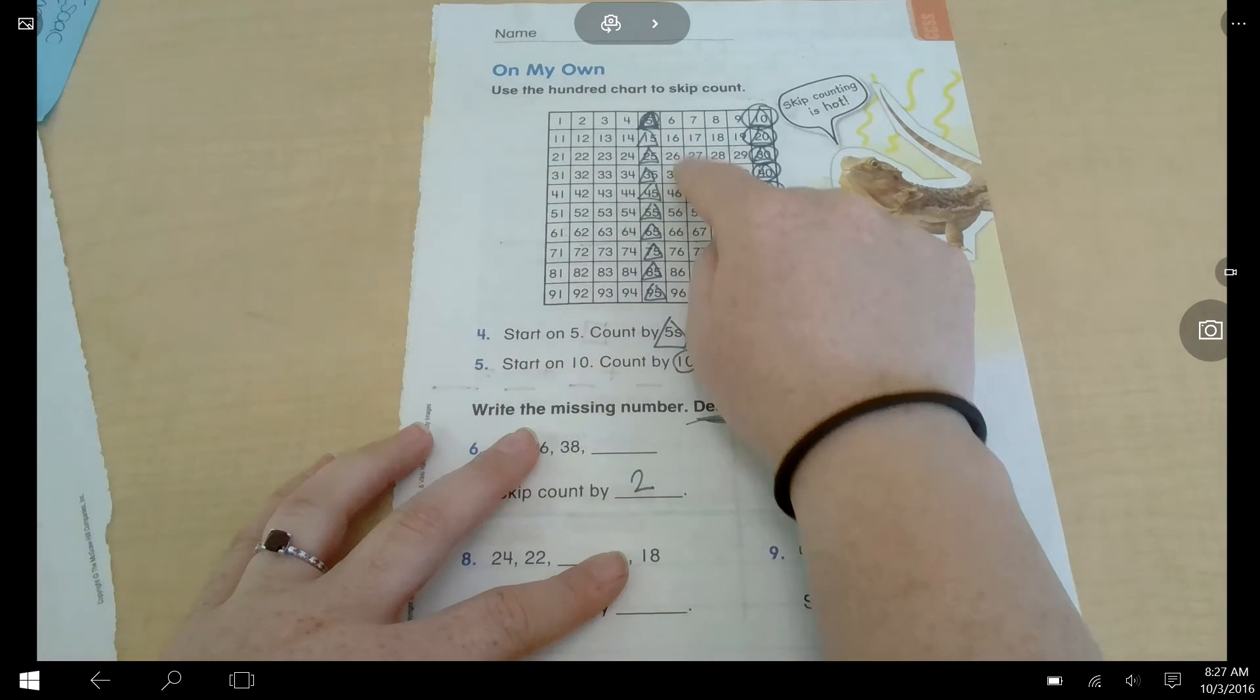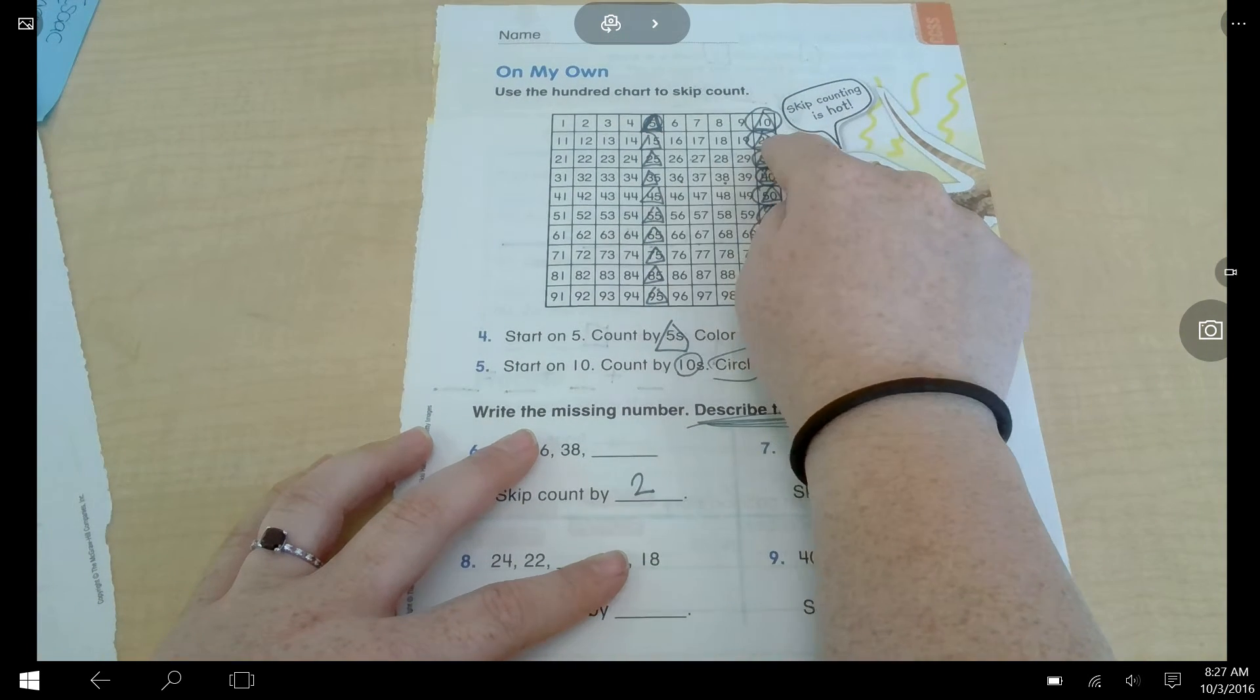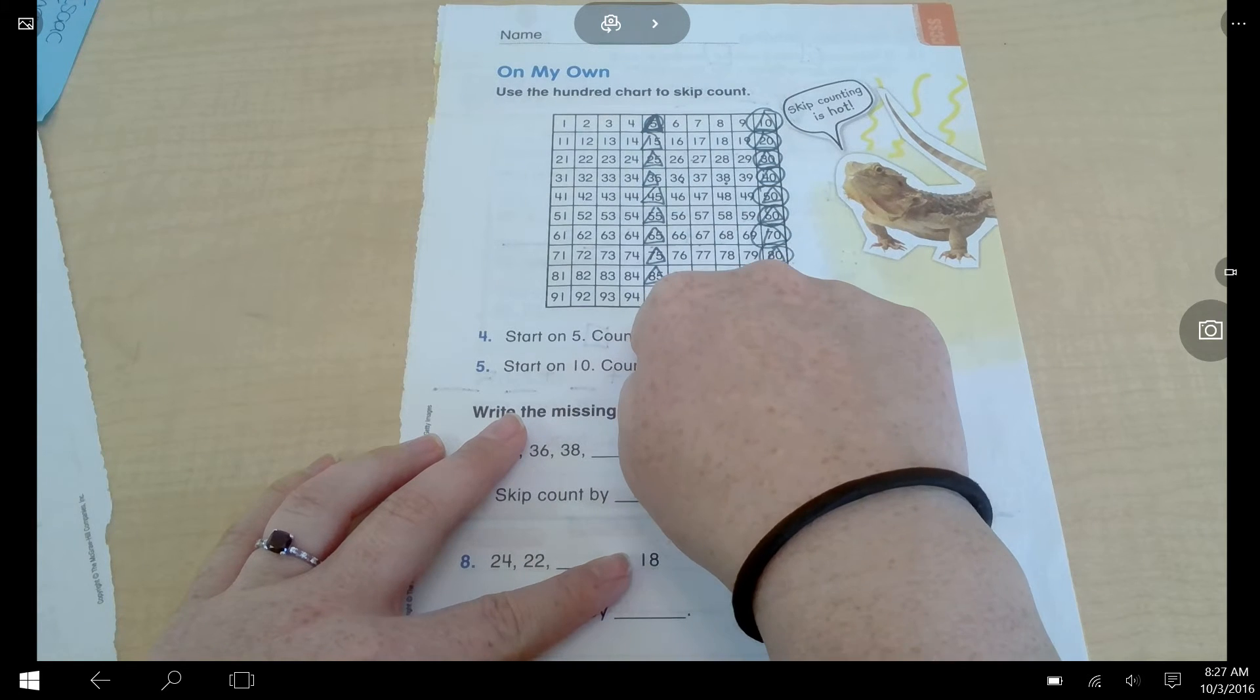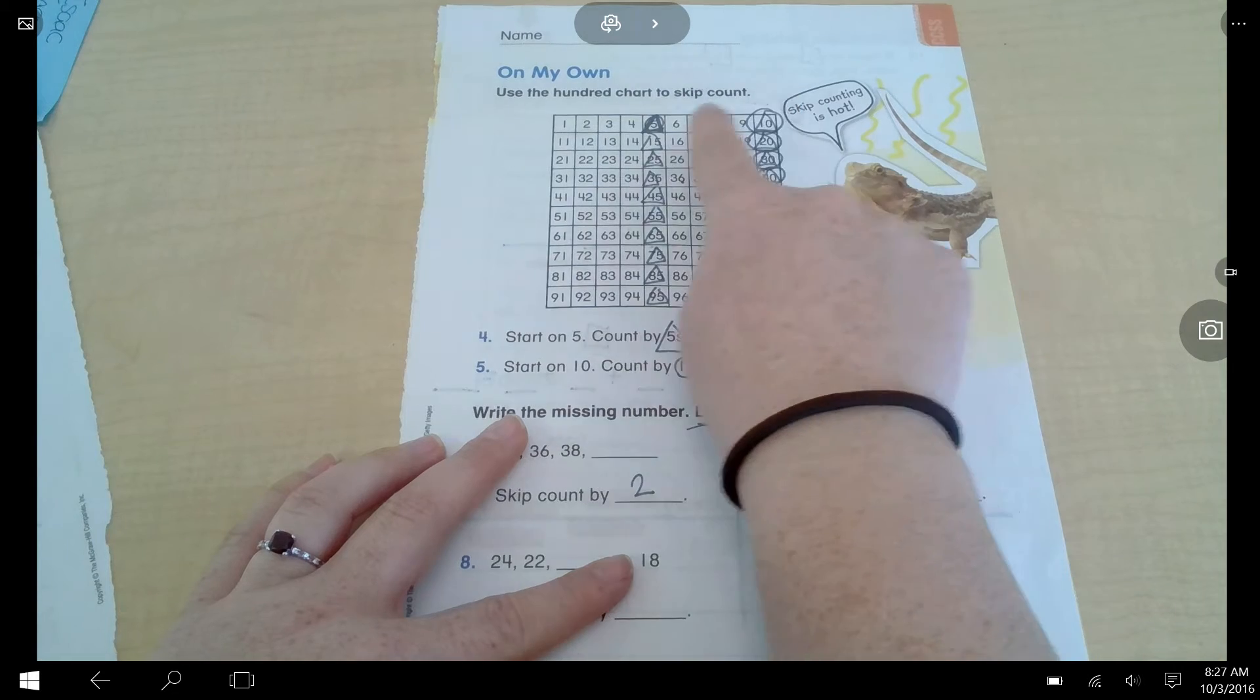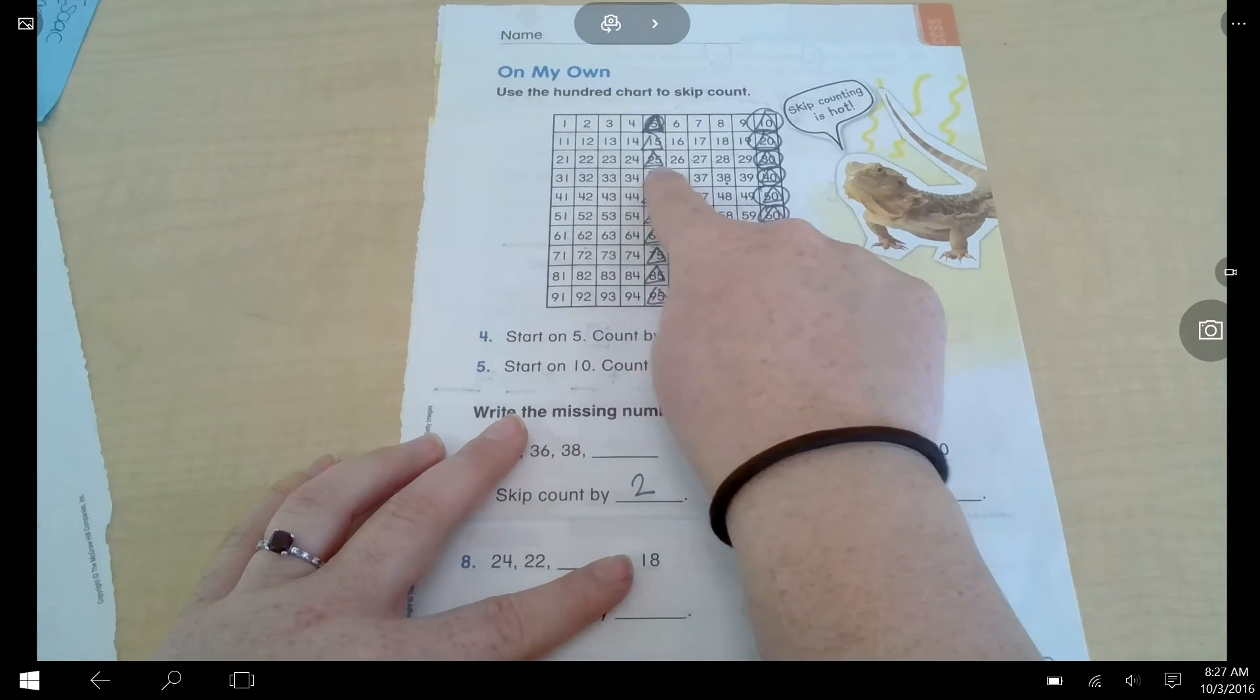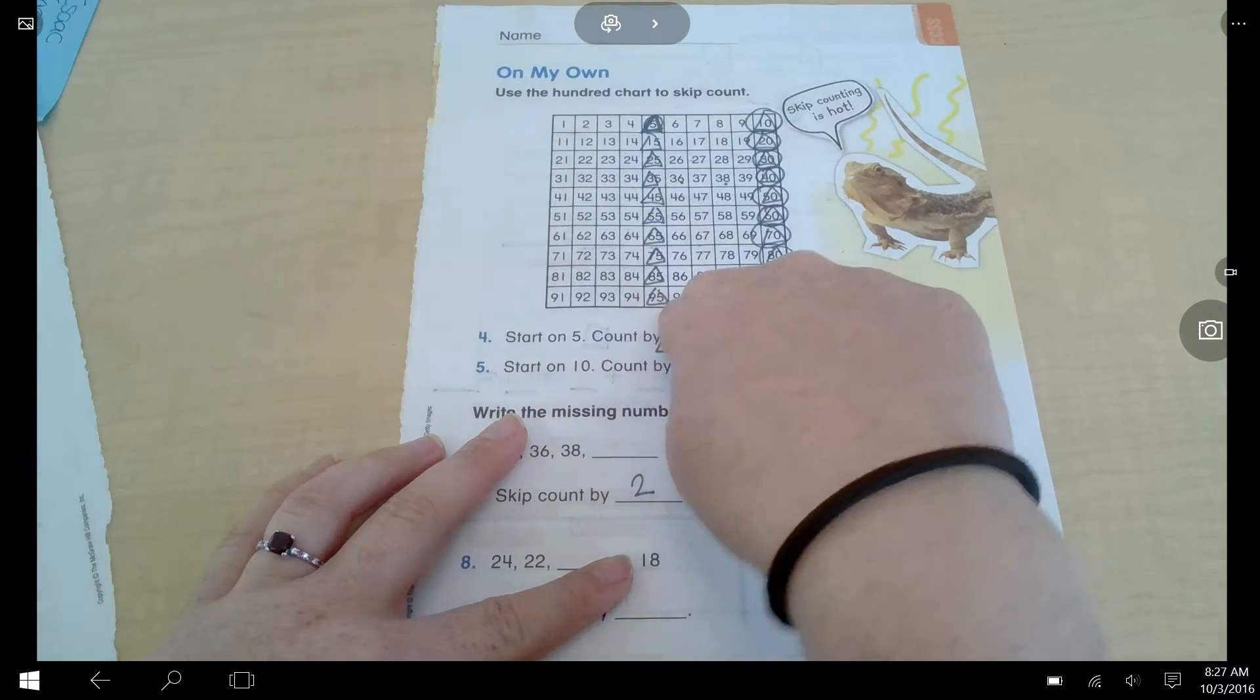On this hundreds chart, you're going to put a triangle around all of the fives and skip count by fives. So, it's not just the fives. It's also going to be the 10. See? 5, 10, 15, 20, 25, 30. So, put a triangle around those numbers now.